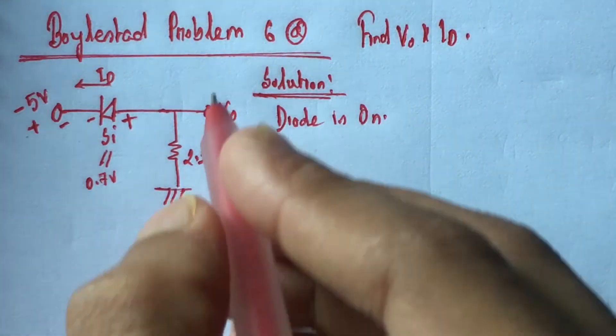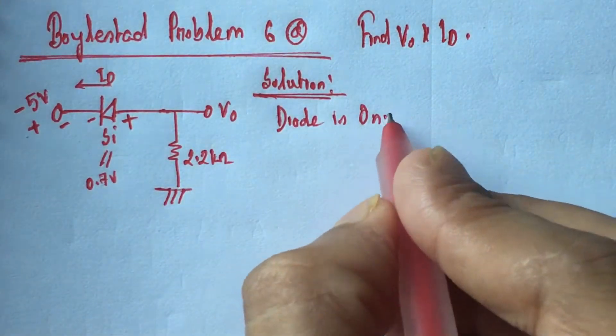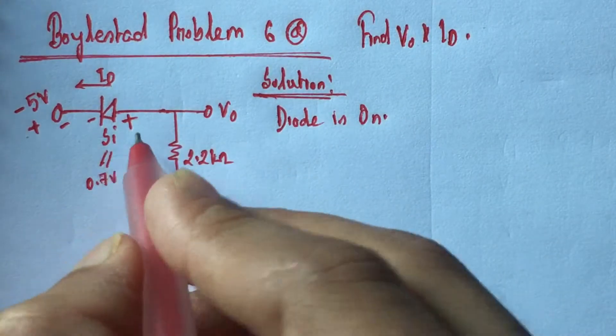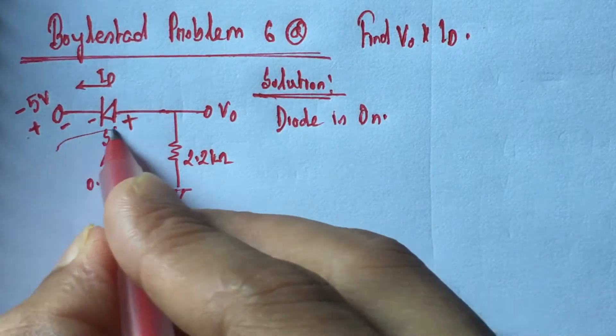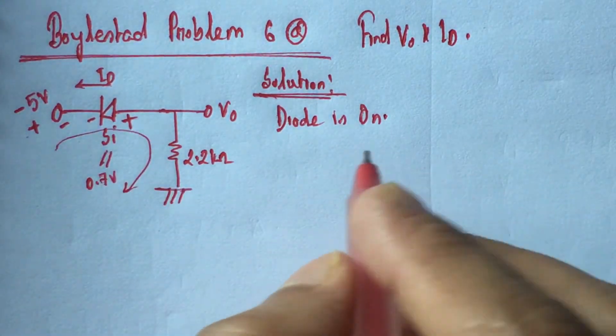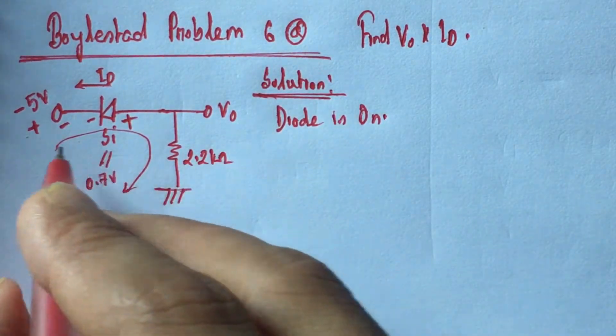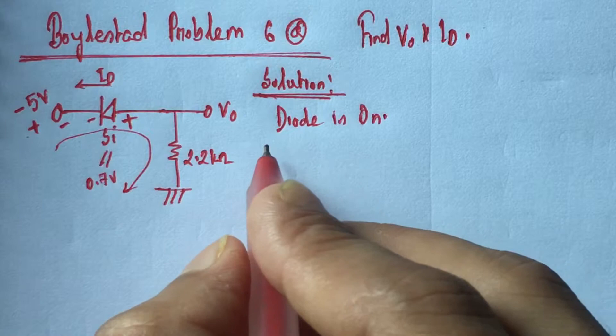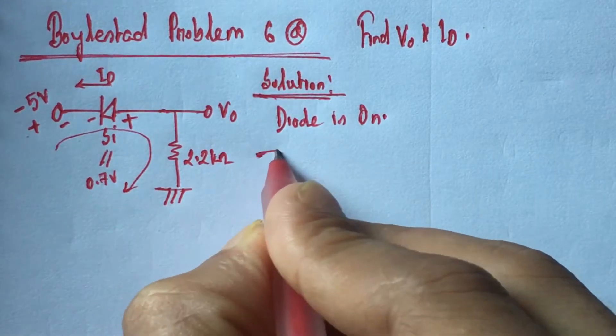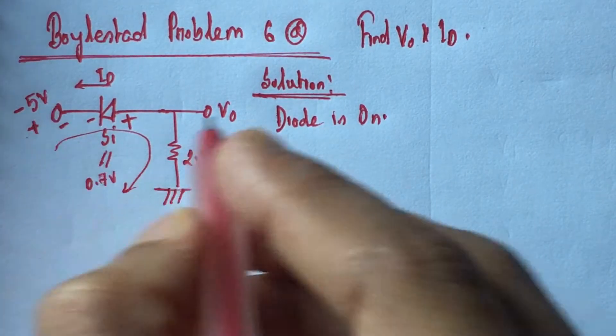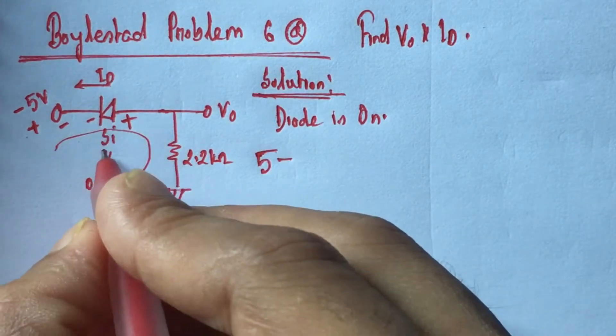Now diode is on. So if we run Kirchhoff's voltage law through this circuit we will have the voltage V0. So now using the KVL we will have 5, this is 5 volts minus 0.7.